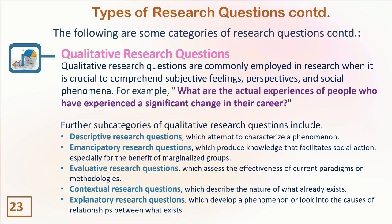Just like quantitative research, there are several categories of qualitative research questions. Sub-categories include: descriptive research questions, which attempt to characterize a phenomenon; emancipatory research questions, which produce knowledge that facilitates social action especially for marginalized groups; evaluating research questions, which assess the effectiveness of current paradigms or methodology; contextual research questions, which describe the nature of what already exists; and explanatory research questions, which explore the causes of relationships between variables.